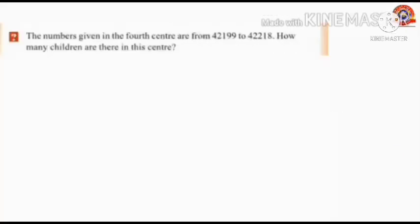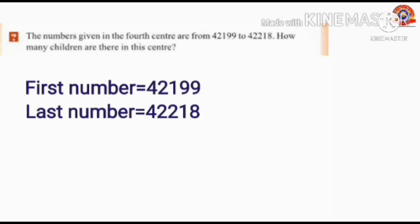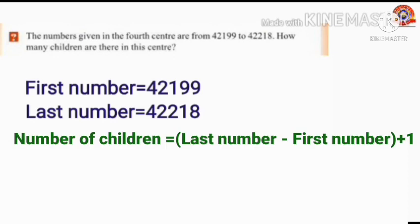Next question: The numbers given in the fourth center are from 42,199 to 42,218. How many children are there in this center? Here the first number is 42,199 and the last number is 42,218. To find out the number of children we apply the formula: last number minus first number plus 1. That is, 42,218 minus 42,199 plus 1.